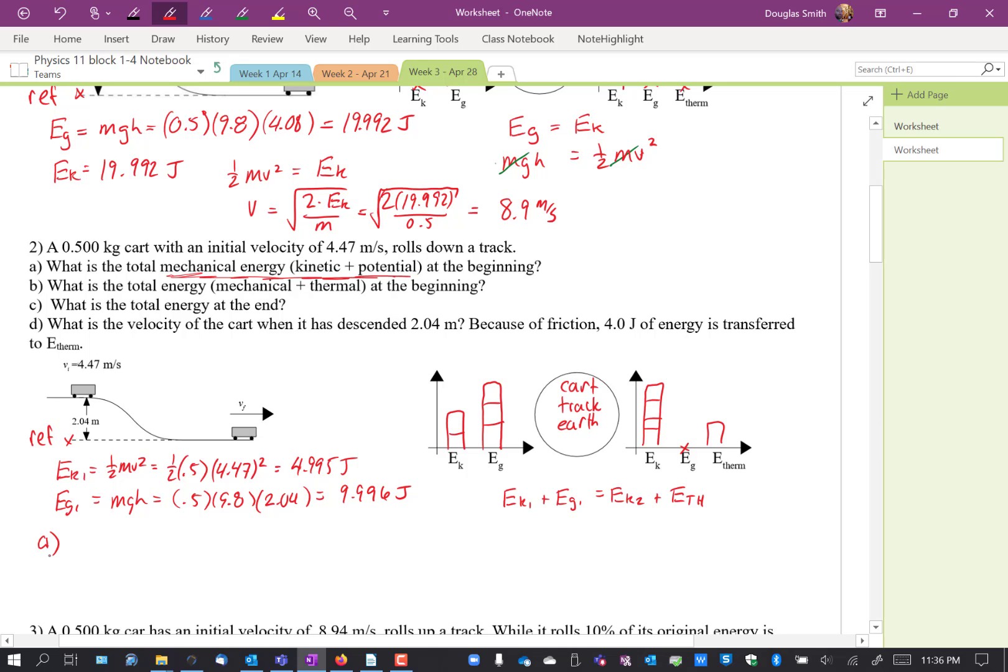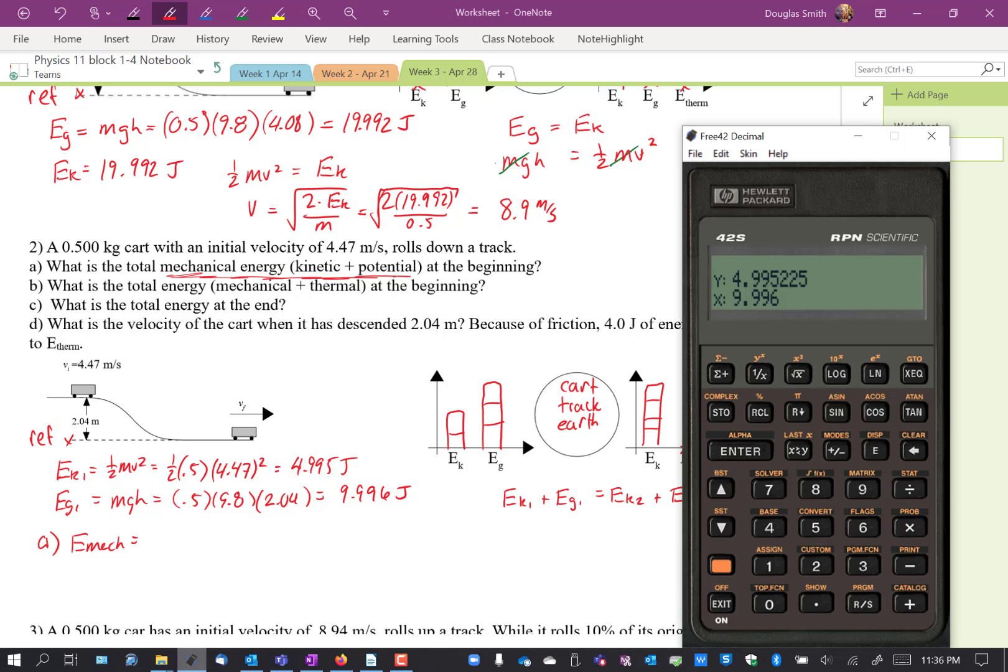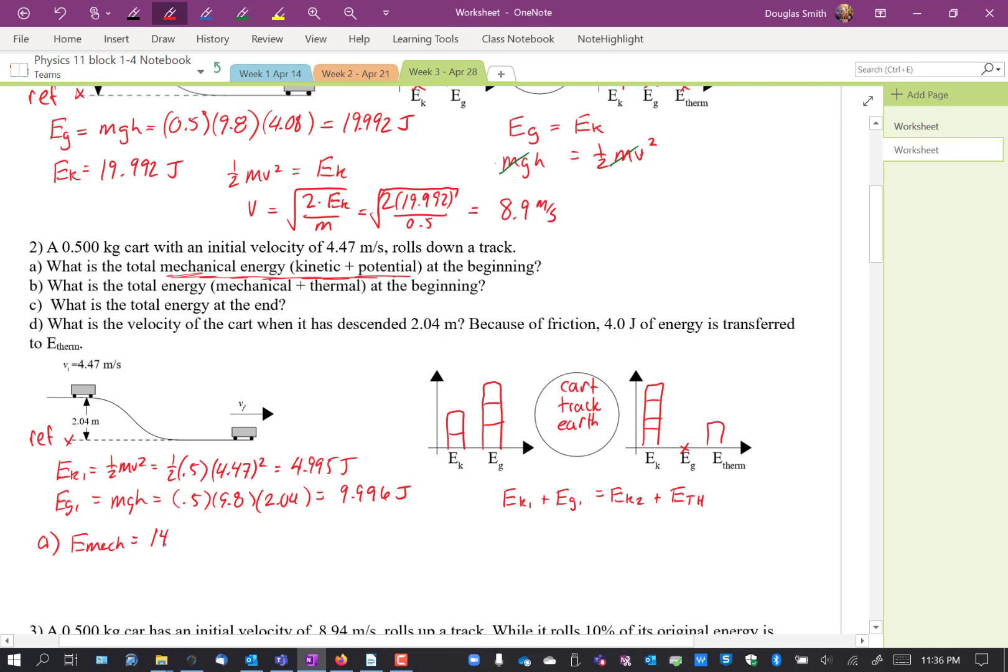Okay, we can now answer the question. What is the total mechanical energy? E-mech equals those two added up together, 14.99. Okay, what is the total energy at the beginning? So the total energy is the mechanical plus thermal, so it's everything. It's kinetic, it's potential, which is the mechanical, plus thermal. There is no thermal at the beginning, so the answer to B is the same as A. E-total is equal to 14.99 joules.